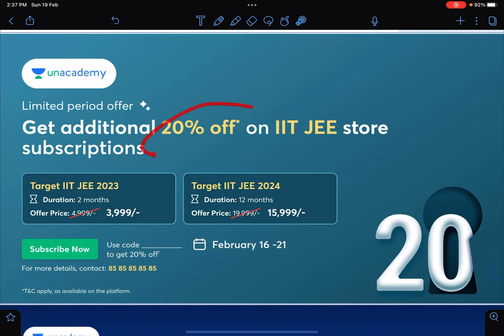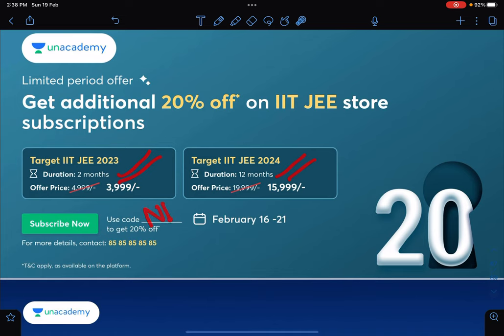Some more discounts are going on for JEE 2023 and JEE 2024. You can use my code Nathan Sir in order to connect with me on Unacademy.